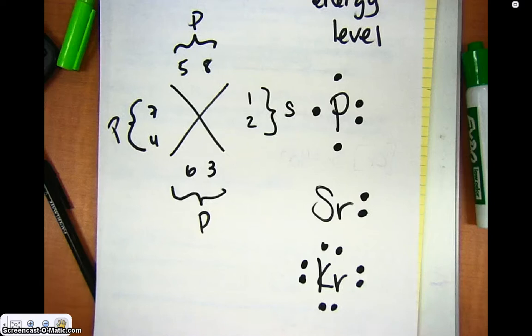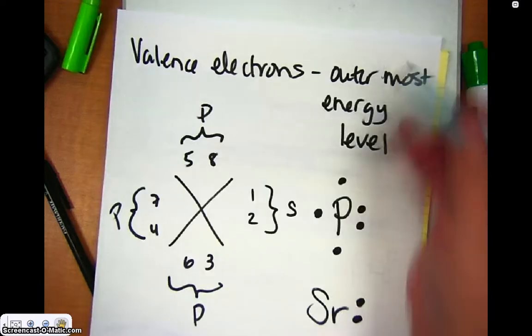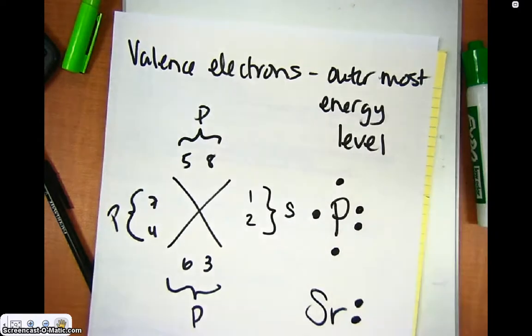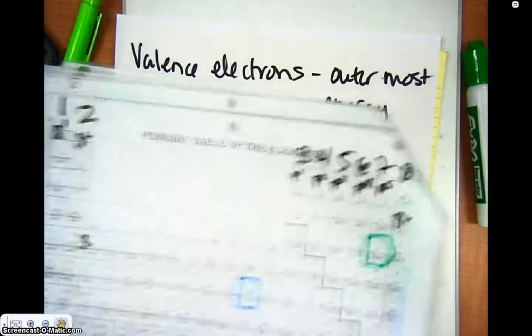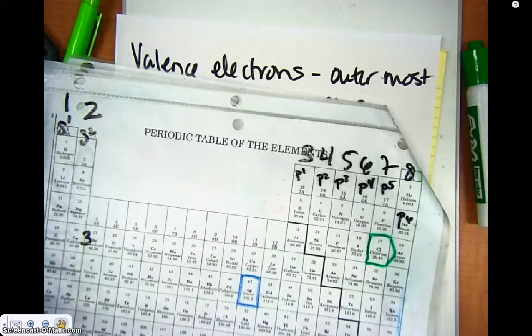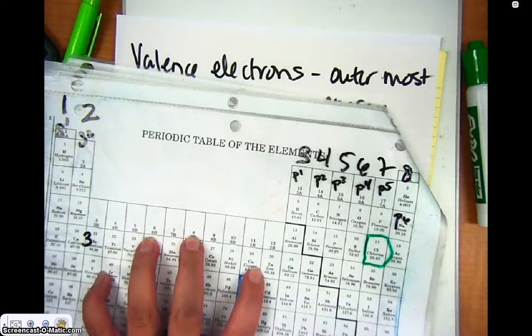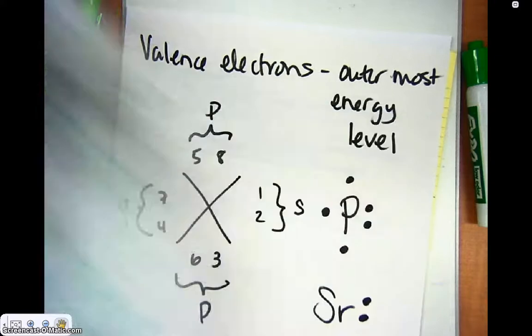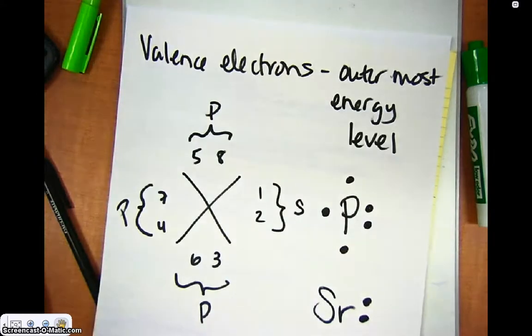So just keep in mind that dot structures show the outermost energy levels. We can determine how many they have just by looking at what column they are in, ignoring D and F for now. And we use dots in a specific sequence in order to represent those valence electrons.